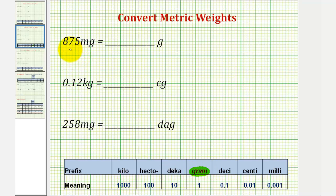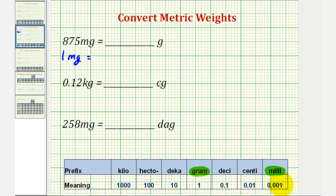For the first example, we want to convert eight hundred seventy-five milligrams to grams. The conversion we'll use is that one milligram equals 0.001 grams, or one thousandth of a gram. Now we'll set up eight hundred seventy-five milligrams as a fraction.